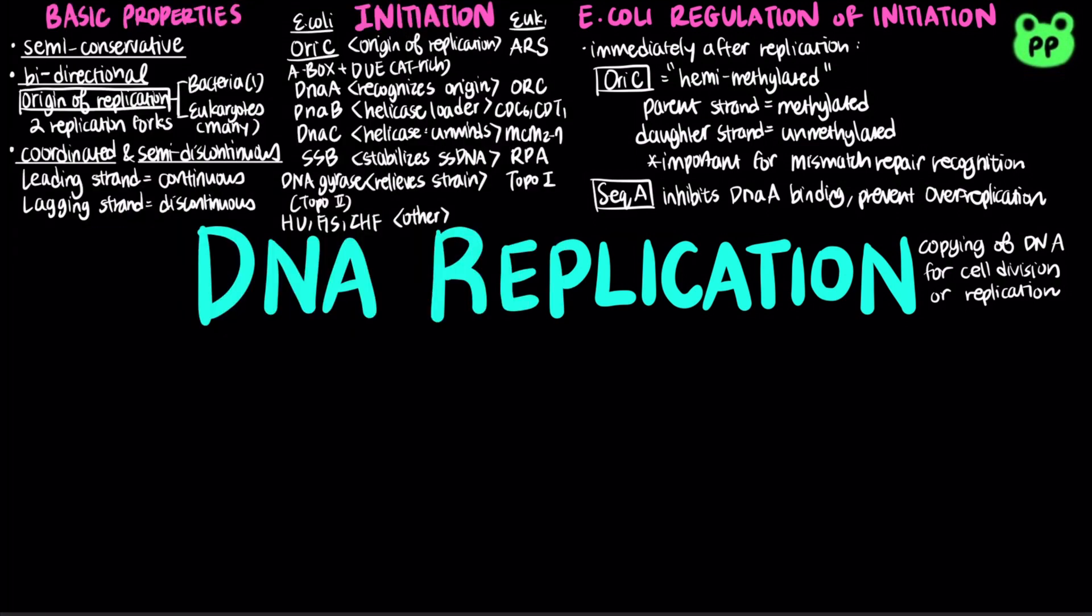During elongation, DNA polymerases synthesize DNA complementary to each of the parent strands. DNA polymerases require an RNA primer to initiate synthesis.